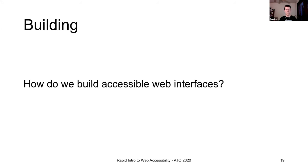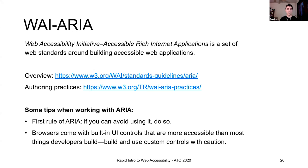Now we know what web accessibility is, why we want to build it, and how to measure it — but how do we actually build accessible web interfaces? I'll touch on two topics: ARIA and testing tools. Check out the WAI-ARIA standards and guidelines for more information. They're a set of standards we can use for building accessible web applications, letting us code our interfaces for use by screen readers and other assistive technologies. Note that one of its recommendations is that if you can avoid using ARIA, you should — many things work in browsers out of the box, so we should just use a button rather than building one out of a div.